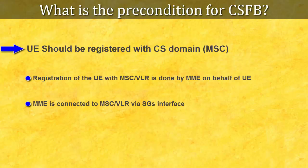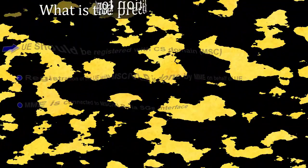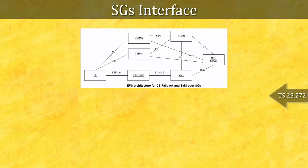Let's understand the SGS interface in detail. This figure shows how MME is integrated with legacy 3G and 2G systems to support CSFB. The main thing to notice here is the SGS interface, which connects MSC present in the 3G or 2G network to MME present in LTE. Interestingly, SGS is an extension of the already-known Gs interface between SGSN and MSC, so it is not an entirely new interface.